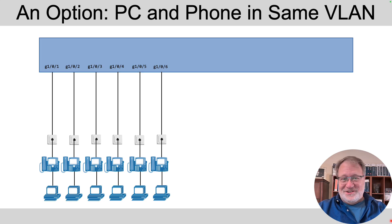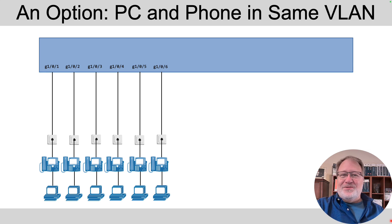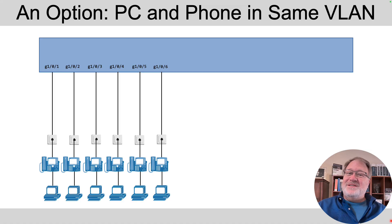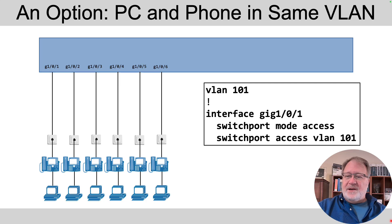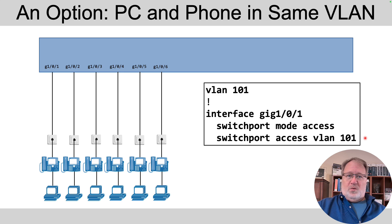An IP phone is a phone device that connects to ethernet and uses IP packets to send and receive the data that comprises the voice — so you use it like a telephone, but it uses TCP/IP. For the configuration, you might think we configure it just like PCs since it's a data device that sends IP packets. That is an option — configure it as an access port with 'switchport mode access' and 'switchport access VLAN 101' and you're done.